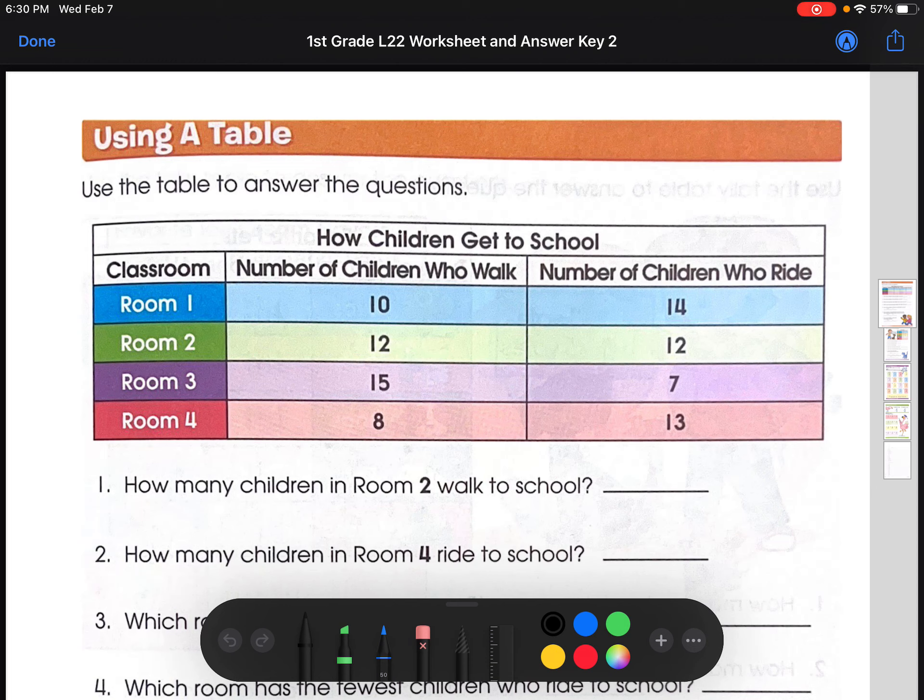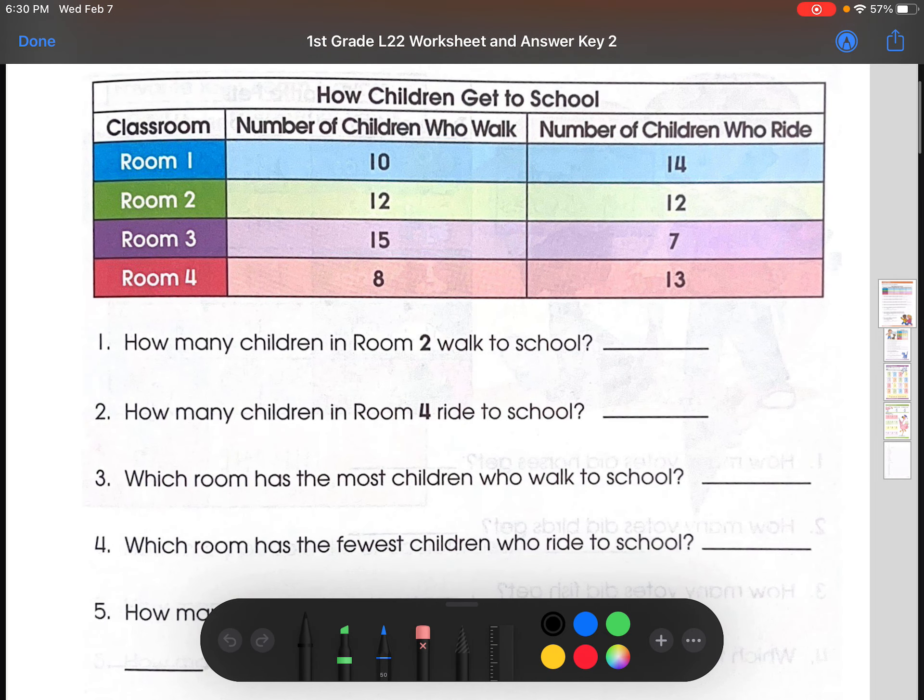First, we're going to do using a table. So use the table to answer the questions below. Let's get straight into number 1. How many children in room 2 walk to school? So first we look right here, find room 2. And then we would look for the kids who walk to school. I'll highlight it, this one right here. So if we look, room 2 would be 12. So the answer to number 1 is 12.